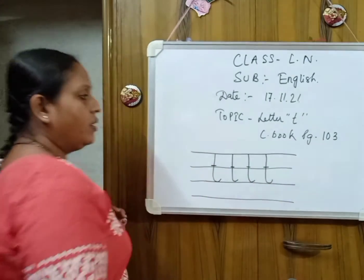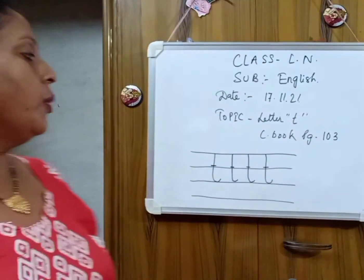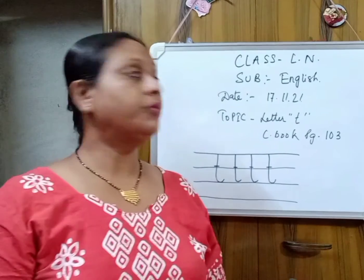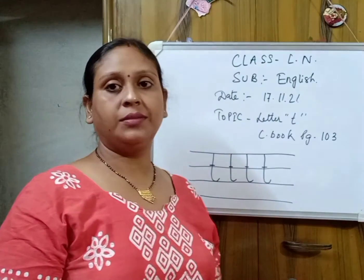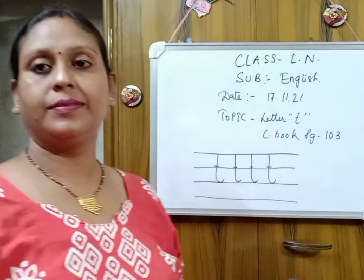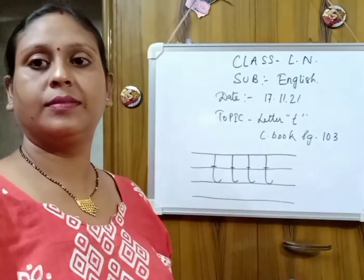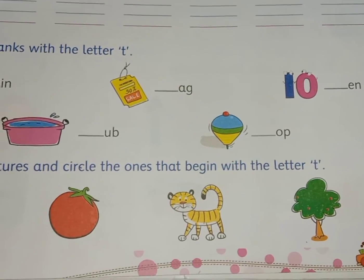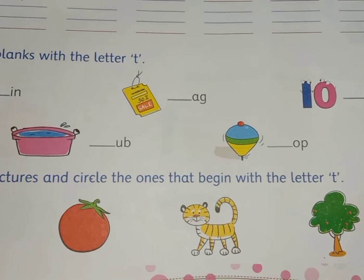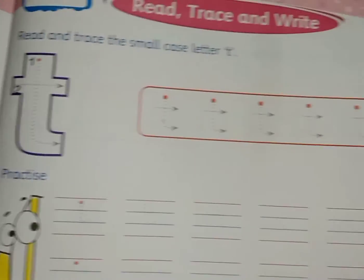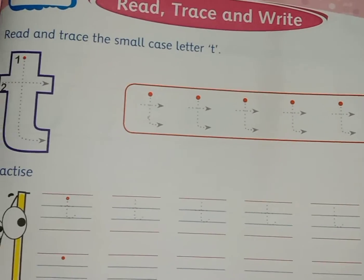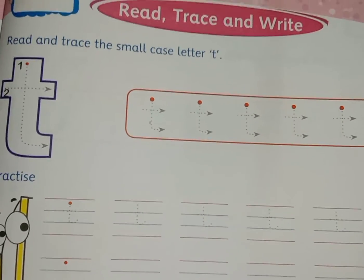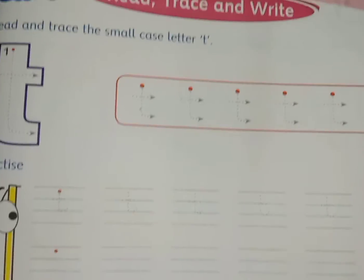So children, now take out your book page number 103. This is page number 103 of your English course book. Read and trace the small case letter T.